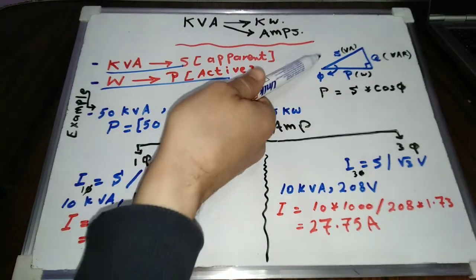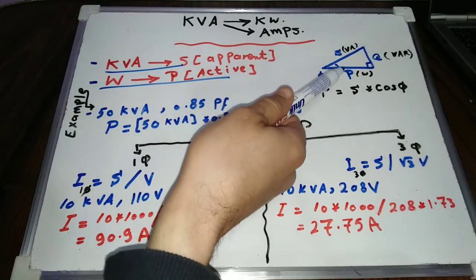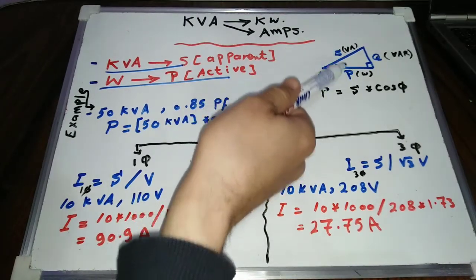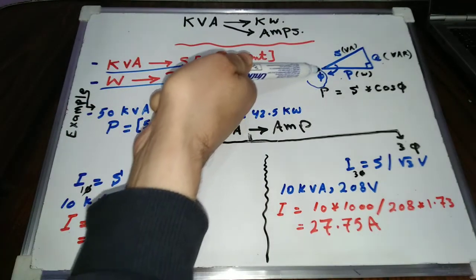The power triangle is the best way to remember the kV ampere to kW formula. As you can see the apparent power in kV ampere, the active and reactive power are forming this triangle, while this angle is the power factor angle.